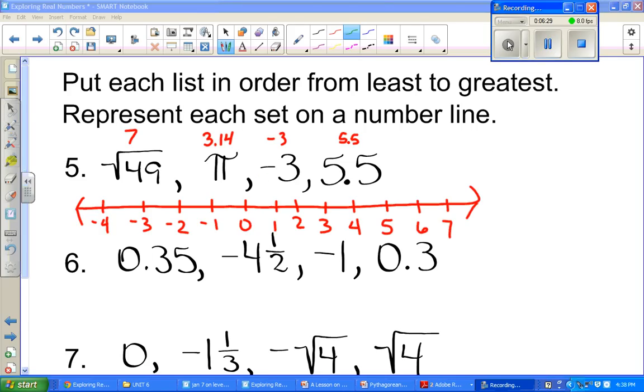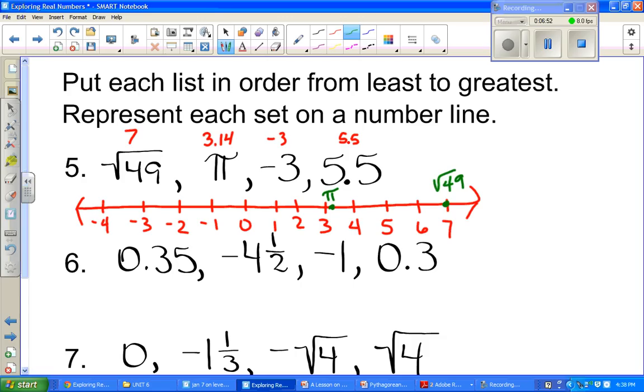Now we have a number line drawn. We're going to go ahead and plot these points on the number line. And we'll just start with the first one, square root of 49, which we said is 7. And then the next one is approximately 3 and 14 hundredths. So it's going to be a little bit further than 3. And the third one is negative 3. So remember, that means we go to the left of the 0. And then 5 and 5 tenths. And that's going to be between 5 and 6. Not exactly between 5 and 6, but it's going to be 5 and 5 tenths, which is just a little bit beyond 5.